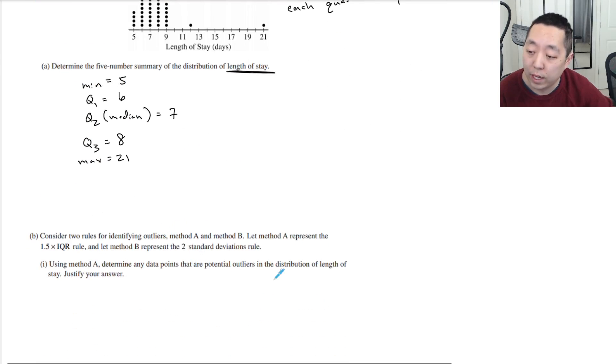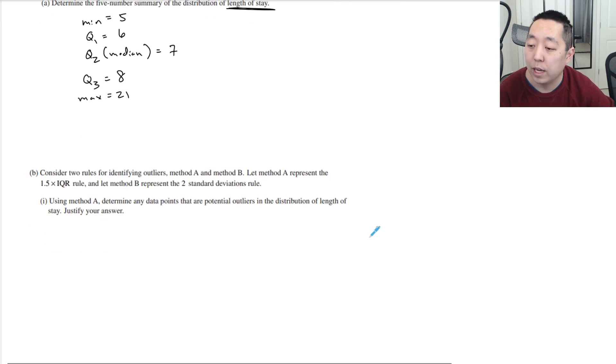Consider two rules for identifying outliers, method A and method B. Let method A represent the 1.5 IQR rule, and method B represent the two standard deviations rule. Using method A, determine any data points that are potential outliers in the distribution length of stay and justify your answer. So IQR is equal to Q3 minus Q1, and so that's two in this case. So 1.5 IQR is equal to three.